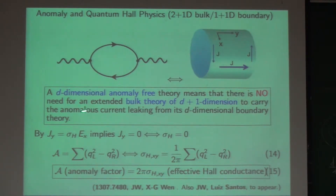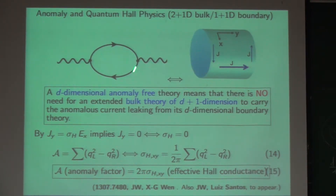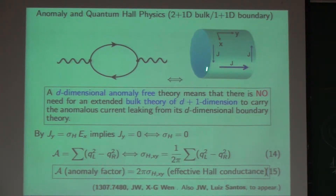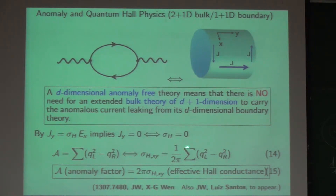This is the idea: what you compute is a complicated loop diagram, but it relates to the quantum loop correction. If there is no contribution from those loop diagrams, it means there is no bulk current flowing through the cylinder — the edge states' current cannot flow from one side to the other. The loop diagram result is exactly related to the Hall conductance. This is really profound.